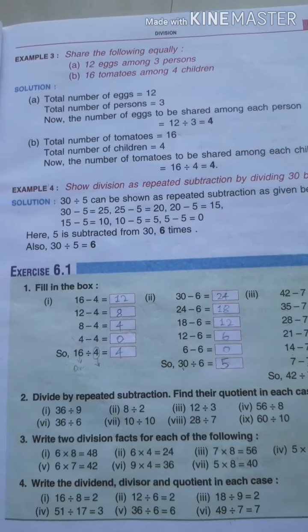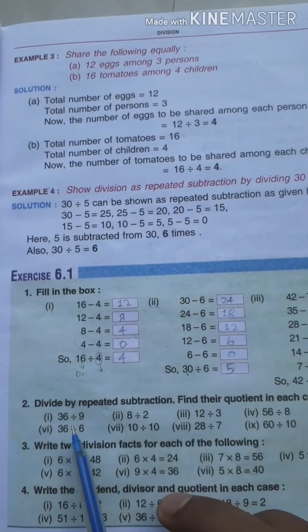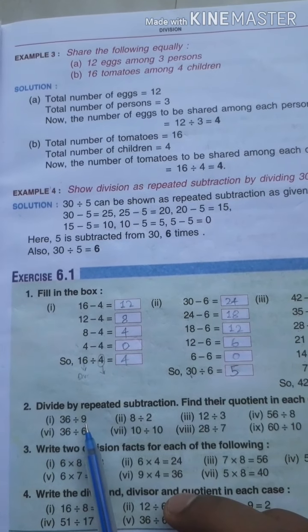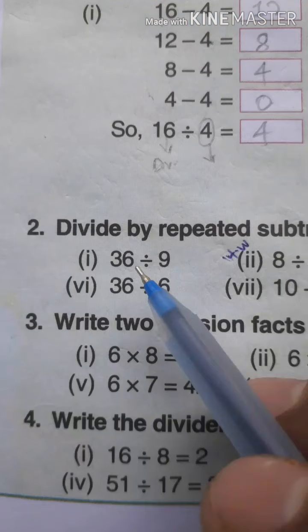Divide by repeated subtraction. Find their quotient in each case. Here, question number 1 is 36 divided by 9.